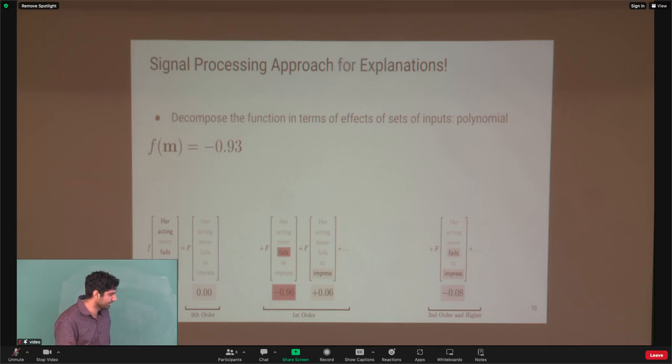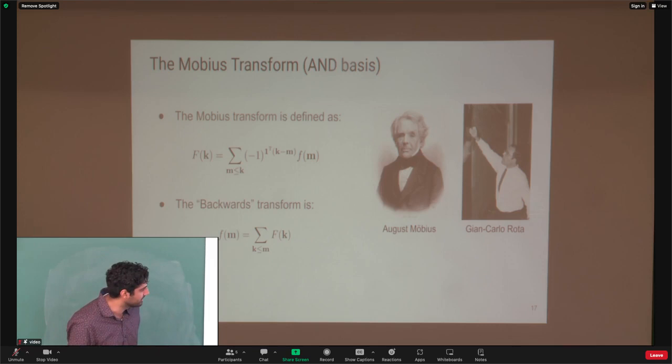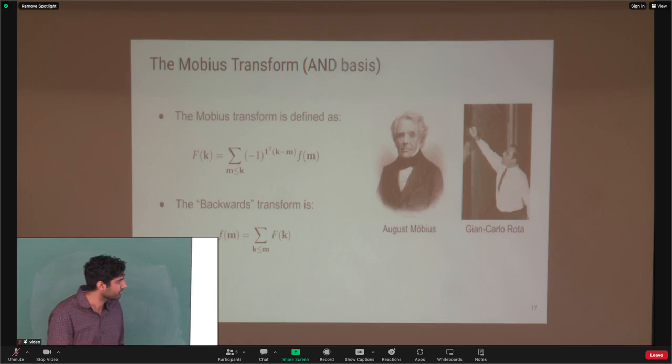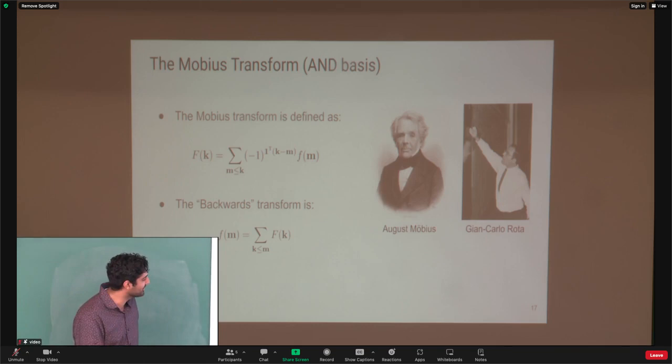This type of transform is called a Mobius transform. The name comes from Mobius doing something in number theory, and Giancarlo Rota observed it's actually the same thing for Boolean functions. The main big picture is that we're doing a transformation onto an AND basis — all possible AND functions between all bits of the inputs are our basis vectors, similar to how a Fourier transform uses parity functions. We use capital F for the Mobius coefficients and lowercase f for the function itself.